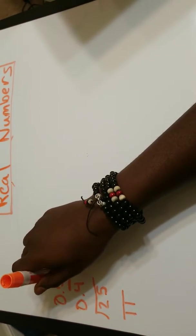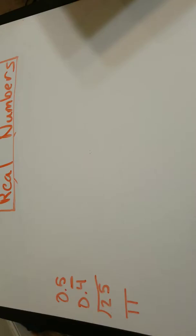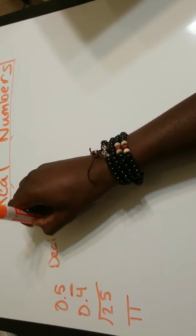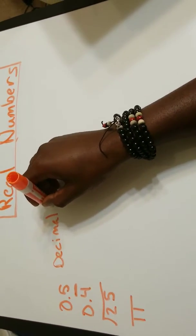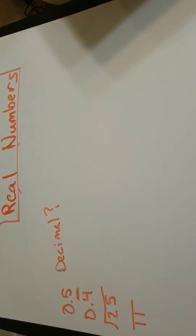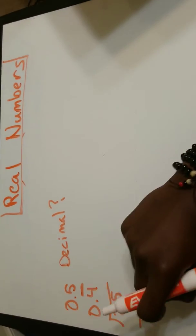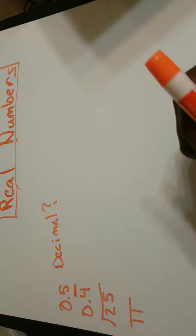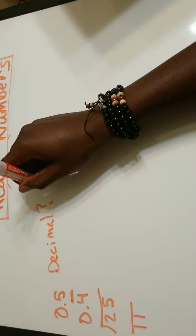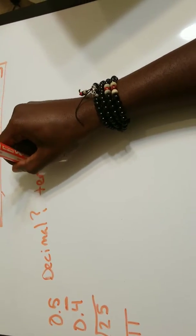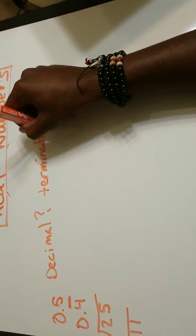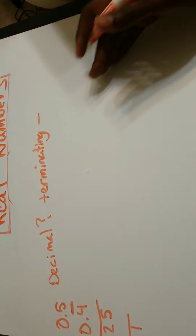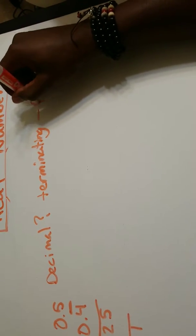So here we have 0.5. 0.5 is considered to be a decimal, right? But what type of decimal is that? Is there a bar? Does it keep going? Does it stop? 0.5 stops. So this would be considered to be a terminating decimal. And the only decimals that we had on the right-hand side earlier was rational.